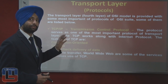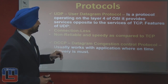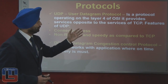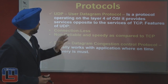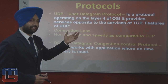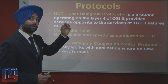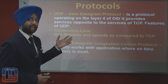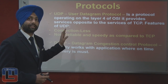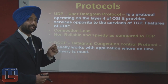Next is UDP — User Datagram Protocol — which operates on Layer 4 of the OSI model. It provides services opposite to those of TCP. The reason is that TCP is a connection-oriented service, whereas UDP is a connectionless service. This is an important point to note.